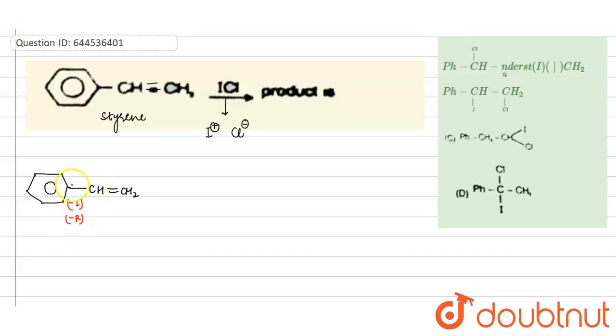the double bond will be broken towards this carbon, so it will form something like this: here CH minus and CH2 plus. So I plus will attack on this carbon and Cl minus nucleophile will attack on this carbon,